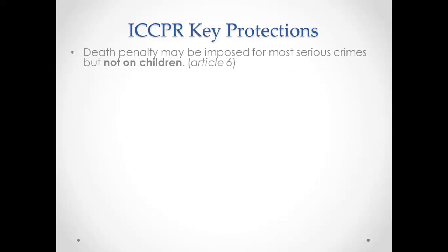Article 6 protects the right to life and particularly protection from arbitrary deprivation of life. There is specific language related to the use of the death penalty — while not prohibited per se under the ICCPR, it should only be imposed for the most serious crimes and definitely not for children. This is one of the articles where the US had to put forward reservations, as in 1992 when the US joined the treaty, the US was still executing children.